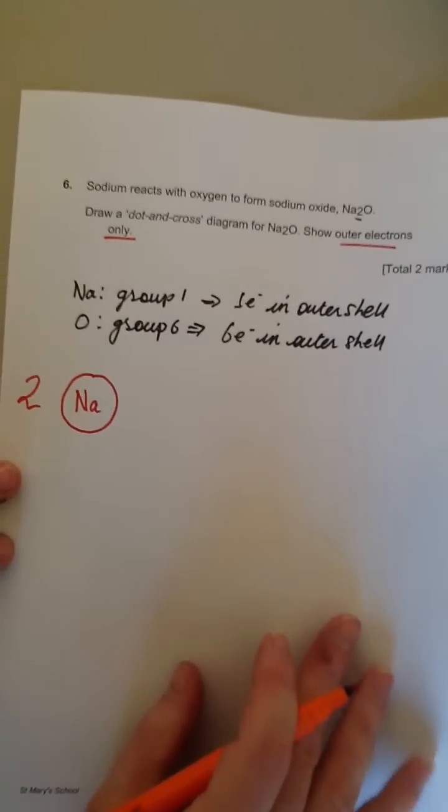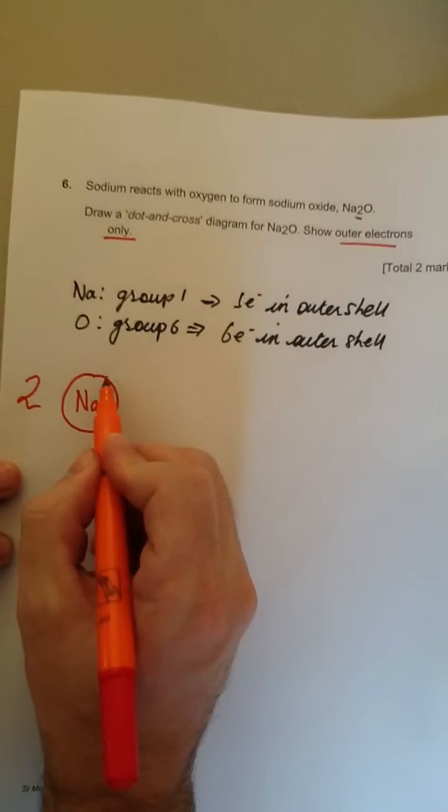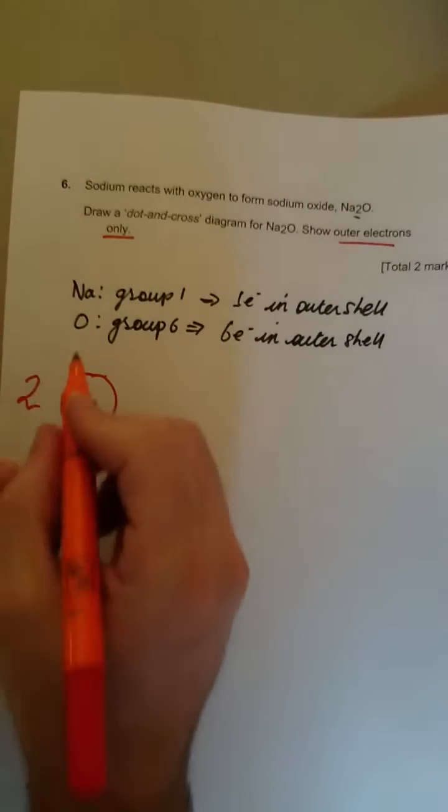So originally, when it was an element, it had an electron there. But when it forms a compound, it gives that electron away so it has a full outer shell. Then it becomes positively charged.